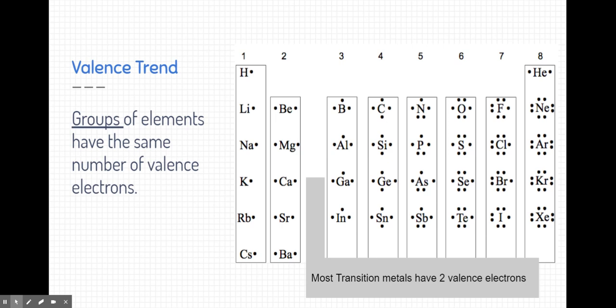Transition metals are a little weird. Most of them have two valence electrons, and then their outer shell electrons kind of fall back in. But if we skip all the way to group 13,